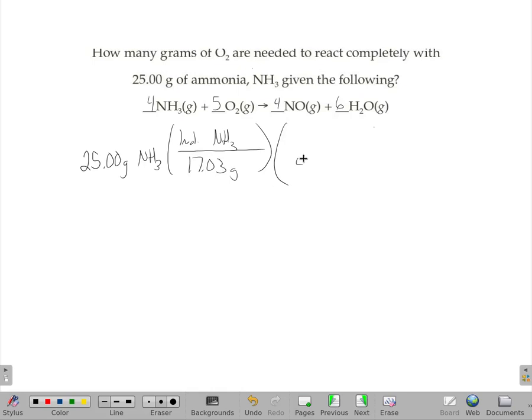And then my equation says there's four ammonias to every five O2s, and then one mole of O2 is 32.00 grams.